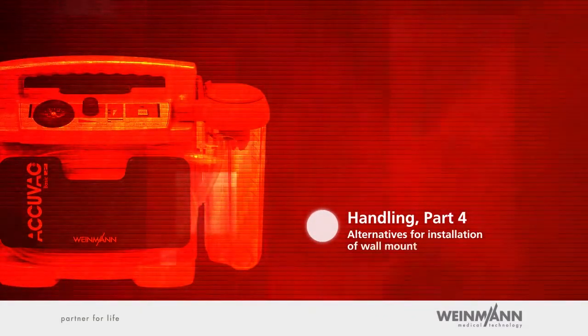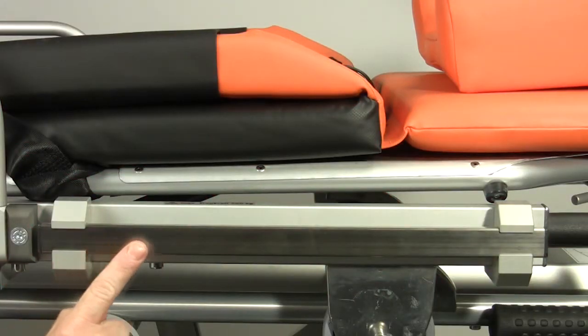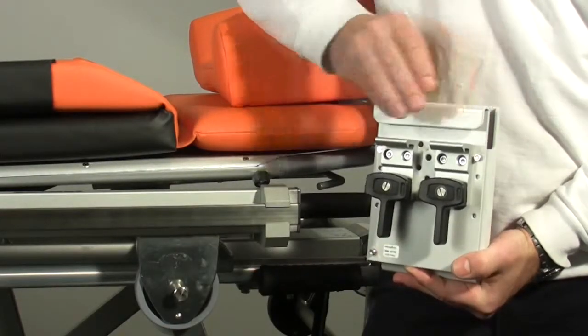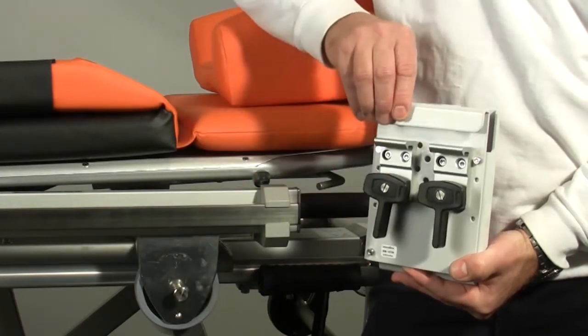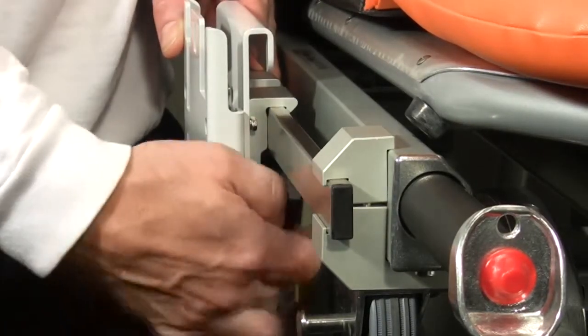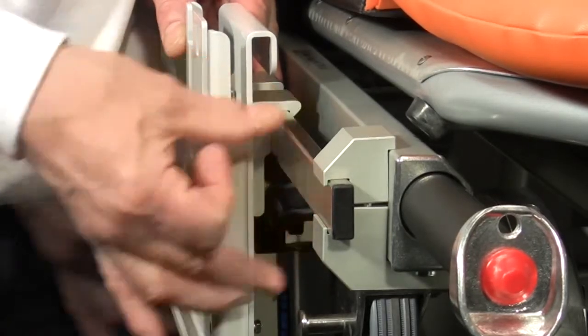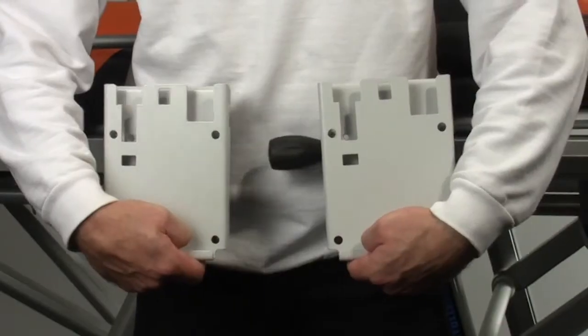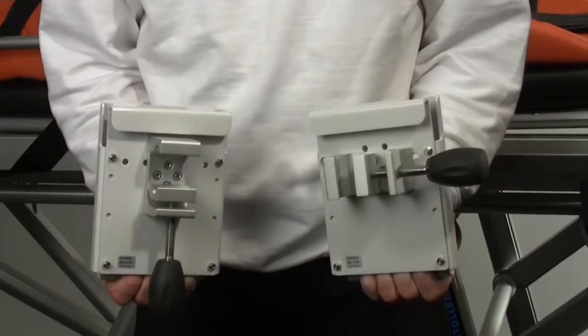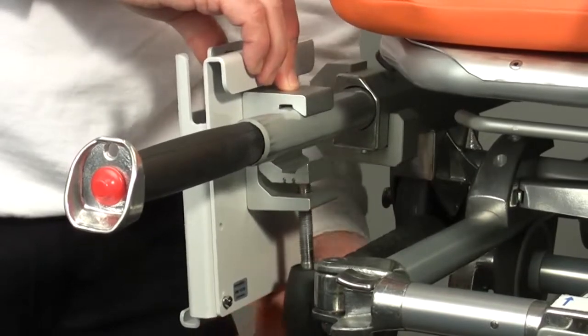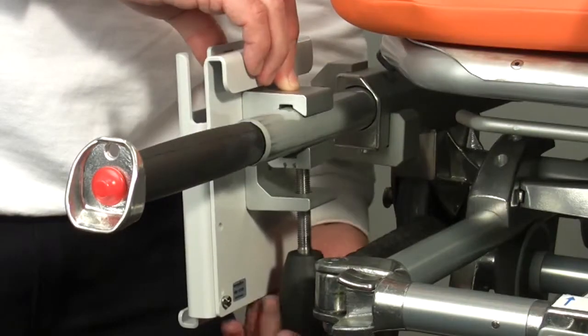Handling, part four: alternatives for installation of wall mount. The wall mount can be equipped with appropriate clamps to attach AcuVac Basic to standard hospital rails. The wall mount can also be equipped with a screw-on pole mount. These options let you fasten the device to horizontal and vertical poles with a diameter of up to 40mm, for example, on the side rail of a stretcher.